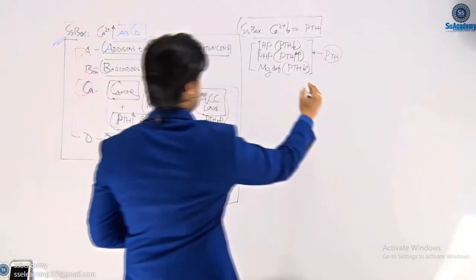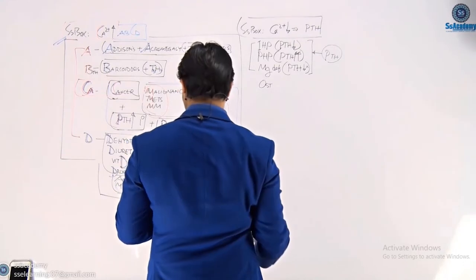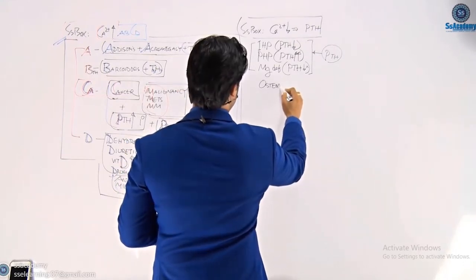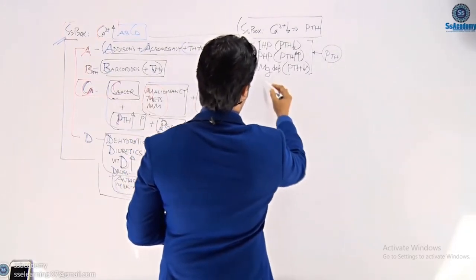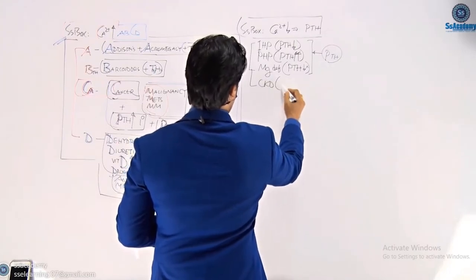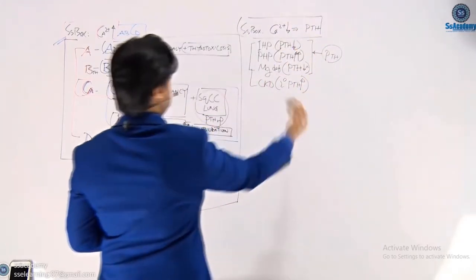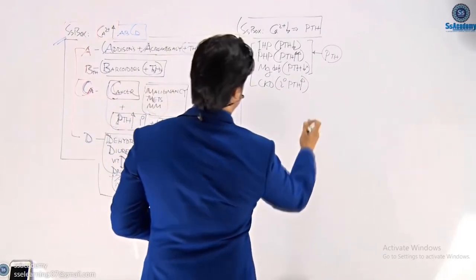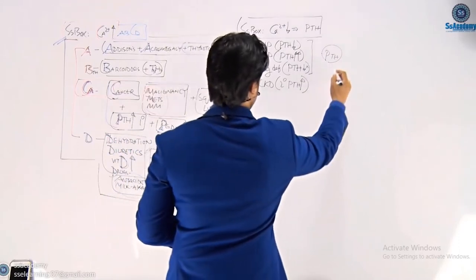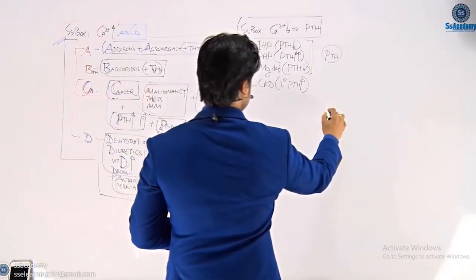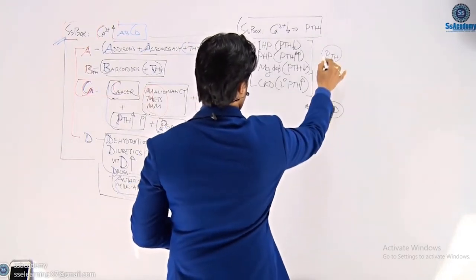Low calcium with low phosphorus together points to vitamin D deficiency — osteomalacia. Also, CKD causes secondary hyperparathyroidism where PTH is raised appropriately. Contrast: in PHP, PTH is inappropriately very high (triple arrow up); in CKD, PTH is appropriately raised (single arrow up); in IHP, PTH is low (arrow down). PTH plays a great role in excluding causes of hypocalcemia.